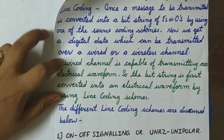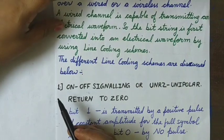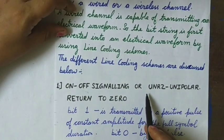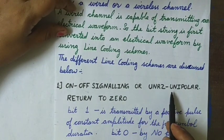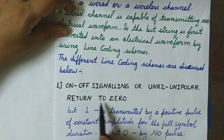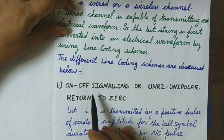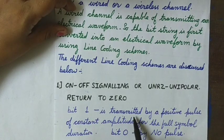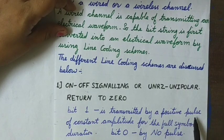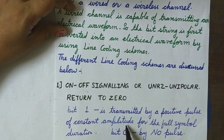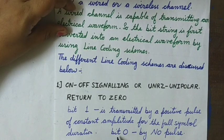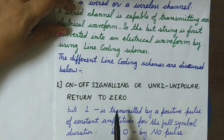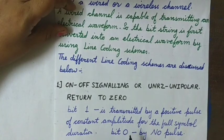The first one is the on-off signaling, also called UNRZ — that is, unipolar return to zero. In on-off signaling, the symbol one is transmitted by using a positive pulse of constant amplitude for the full symbol duration, and the bit zero is transmitted by no pulse. This will be made clear through an example.